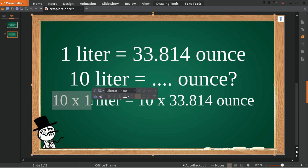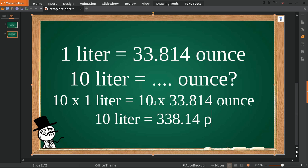10 multiplied by 1 equals 10 liters. Then we take 33.814 and move the decimal point. So 33.8 multiplied by 10 equals 338.14 ounces. That's the answer to the question.